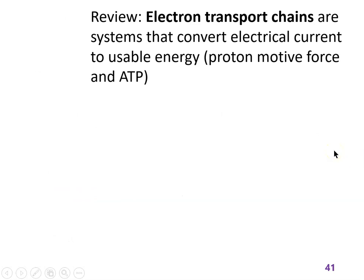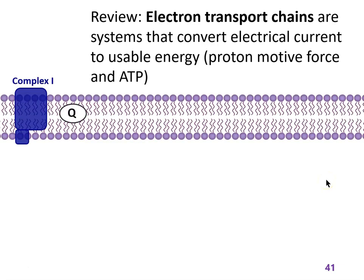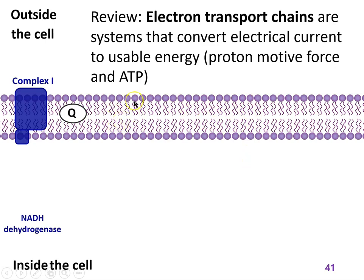The whole point is we have electron transport chains that can use this electrical movement, ultimately to make a proton motive force and to make ATP. We have a lipid bilayer — the cell membrane. In mitochondria this is the inner membrane; in gram-negative bacteria this is also the inner membrane; gram-positive bacteria only have one membrane. We have a series of enzymatic complexes that catalyze reactions between electron-carrying molecules, giving electrons to each other in a chain all the way to oxygen.